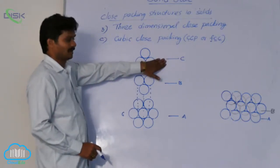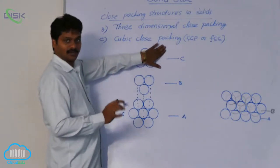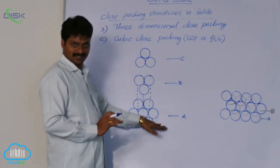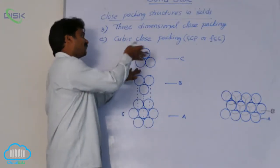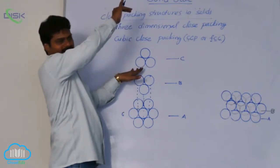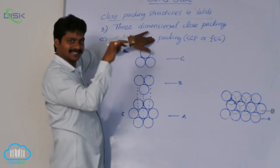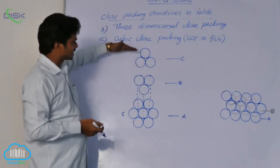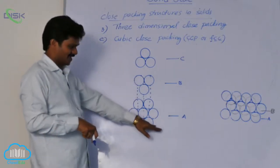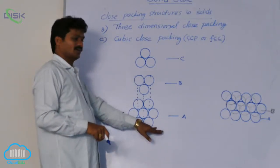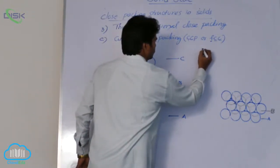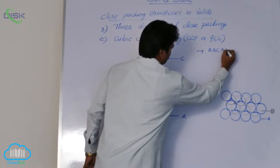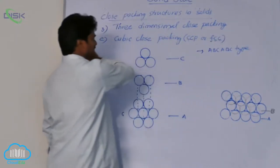Spheres of layer C now do not align with the spheres of the first layer. If you place the fourth layer over the third layer, its spheres align with the first layer. That means C is not the same as A. So here we get an A, B, C, A, B, C type layer structure in CCP.